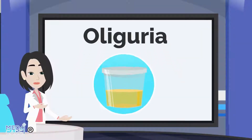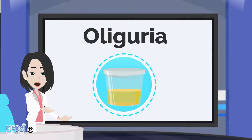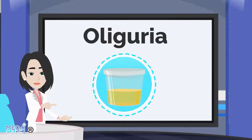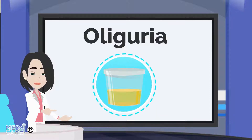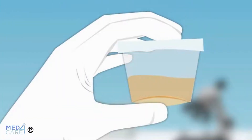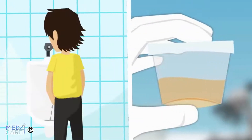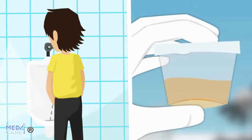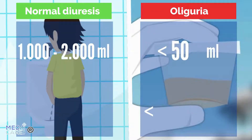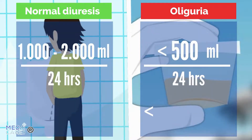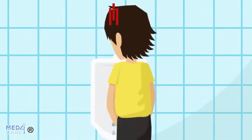Oliguria is a clinical condition in which the amount of urine produced is lower than normal. In the case of oliguria, the amount of urine is less than 400-500 ml throughout the day, or in any case less than 20 ml per hour. The causes of oliguria are many, some of which are not necessarily pathological.